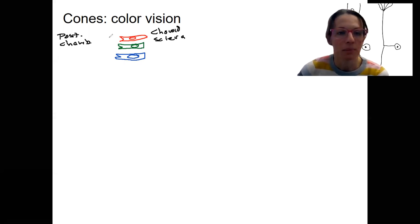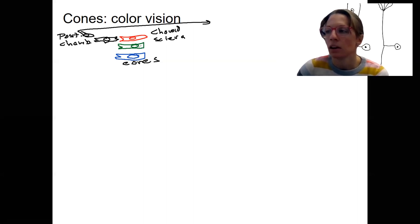Then we would have bipolar cells in the middle here, and ganglion cells that then would transmit this back to the brain. So here are our cones in three different colors, each detecting a different wavelength.